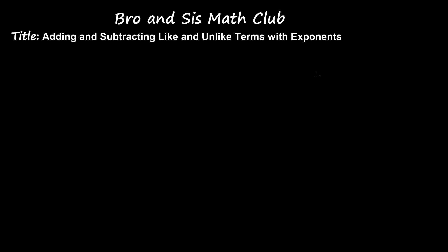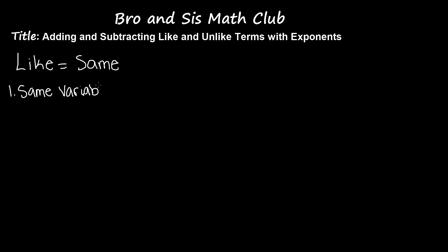Hey guys, welcome back to Bros Math Club. Today's topic is adding and subtracting like and unlike terms with exponents. So what are like and unlike terms? Like terms means that they're the same. There are two factors to make sure that the terms are like: the first one is that they have to have the same variable, and the second one is that the power of the variable has to be the same.